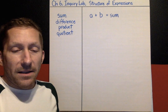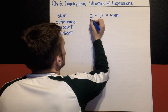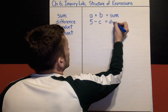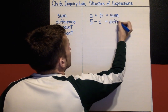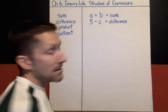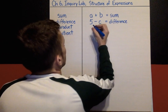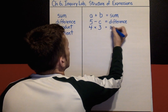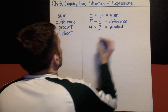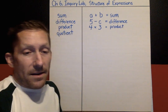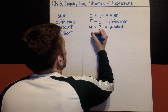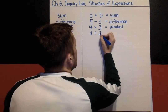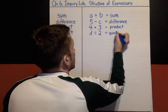A difference is the answer to a subtraction problem — for example, five take away C; the answer to that would be called the difference. A product is the answer to a multiplication problem. And finally, quotient — if I have the variable D divided by 2, that answer would be a quotient.